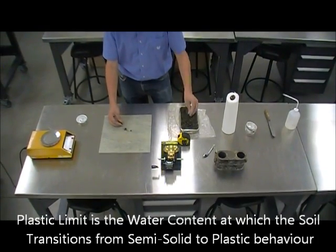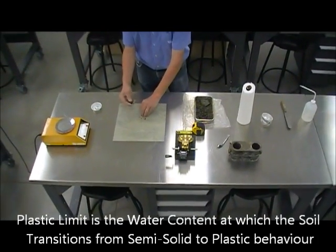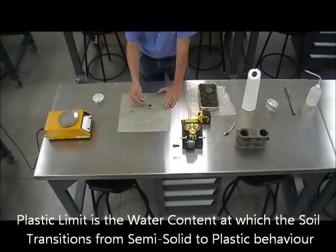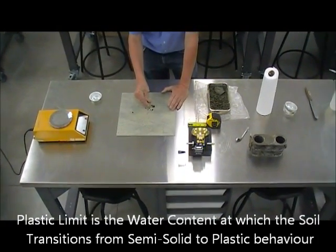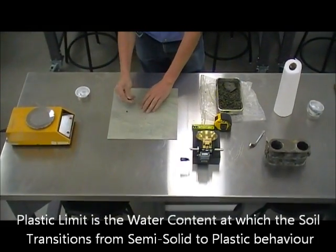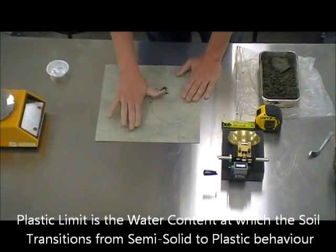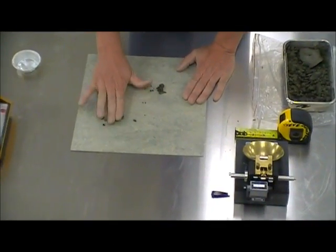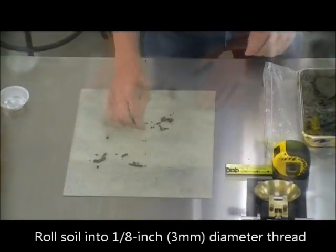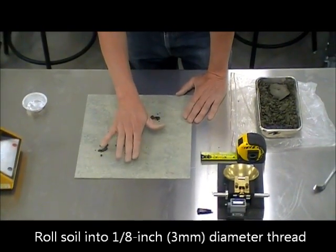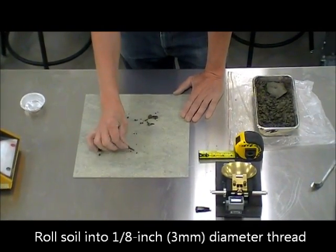So the soil will start behaving as a plastic material. It's simply a water content where the soil behaves in such a way that it can be rolled on a surface like this to form a thread. If it's very wet, you will find that the thread can easily be longer than an inch.